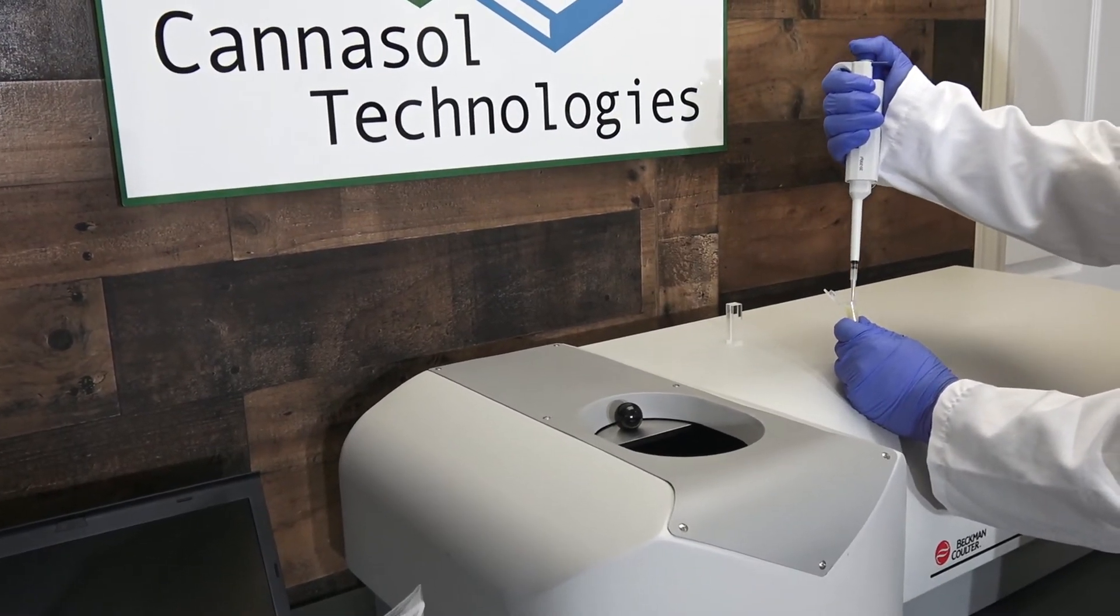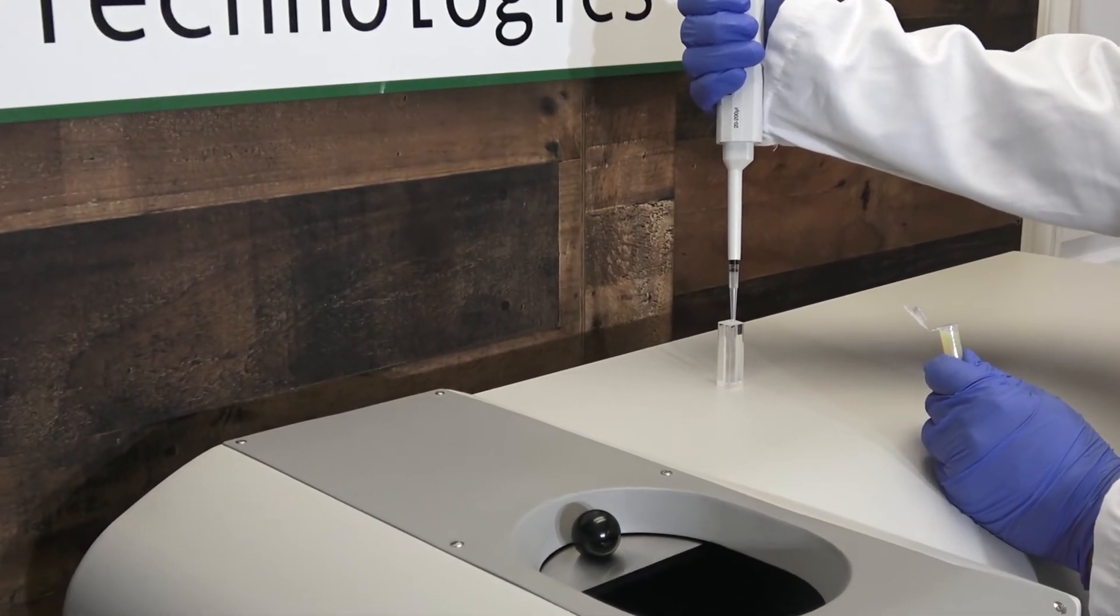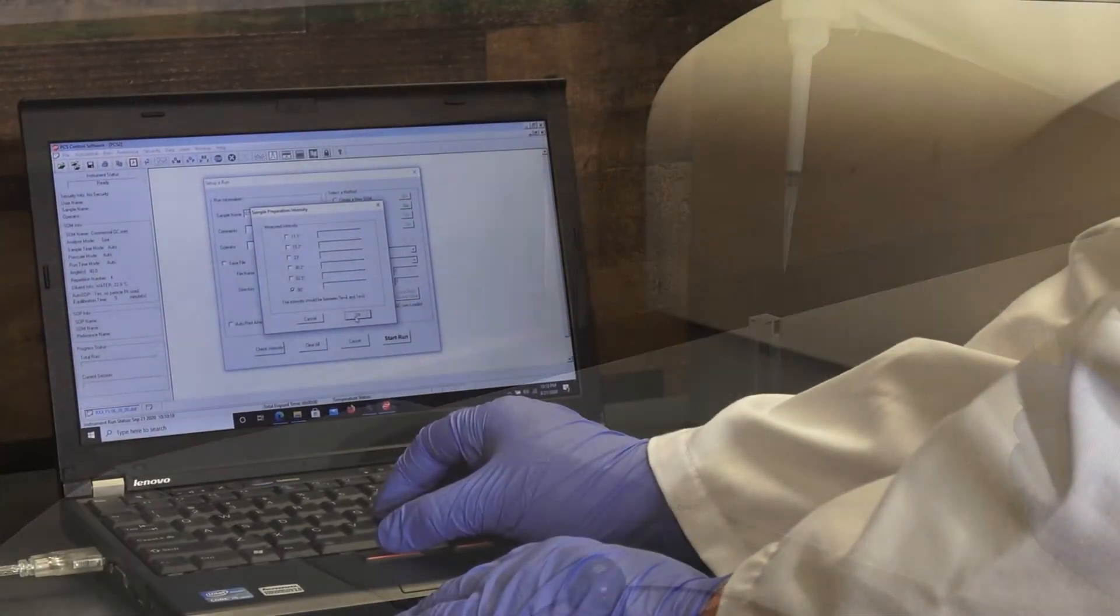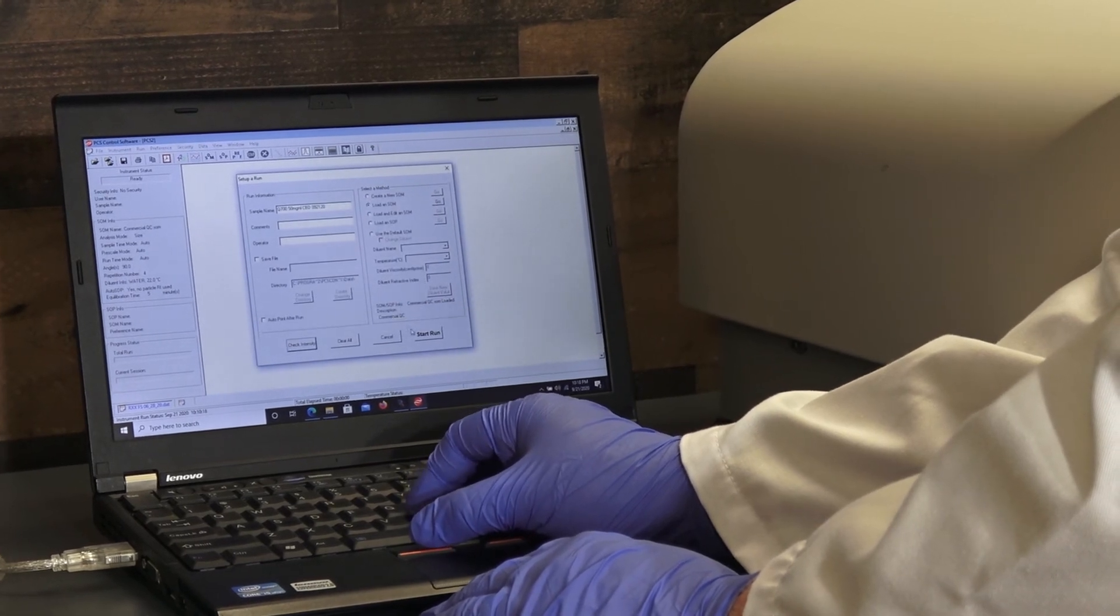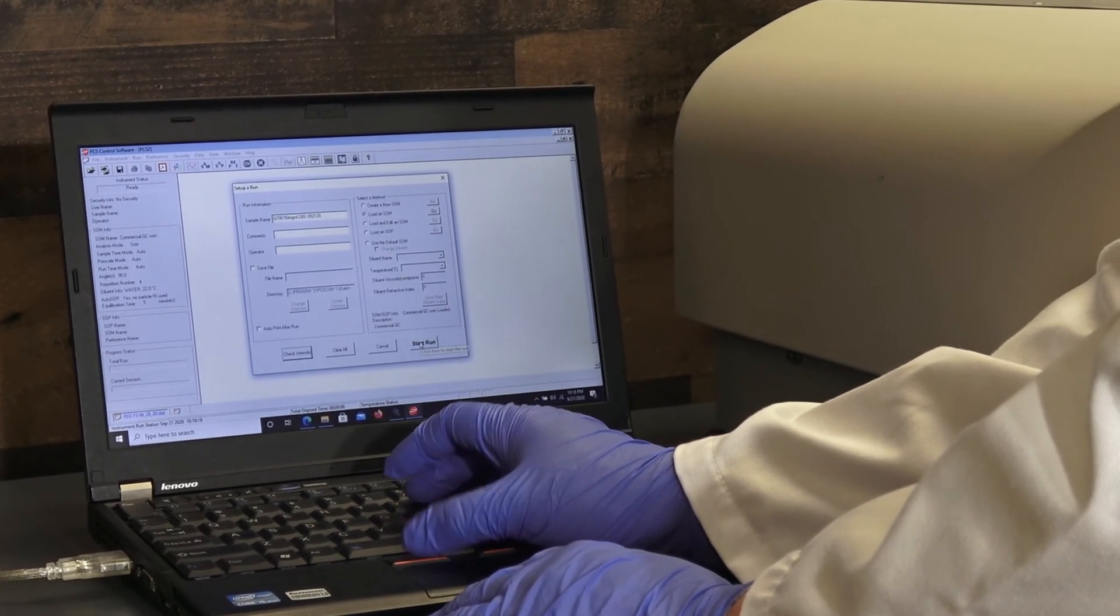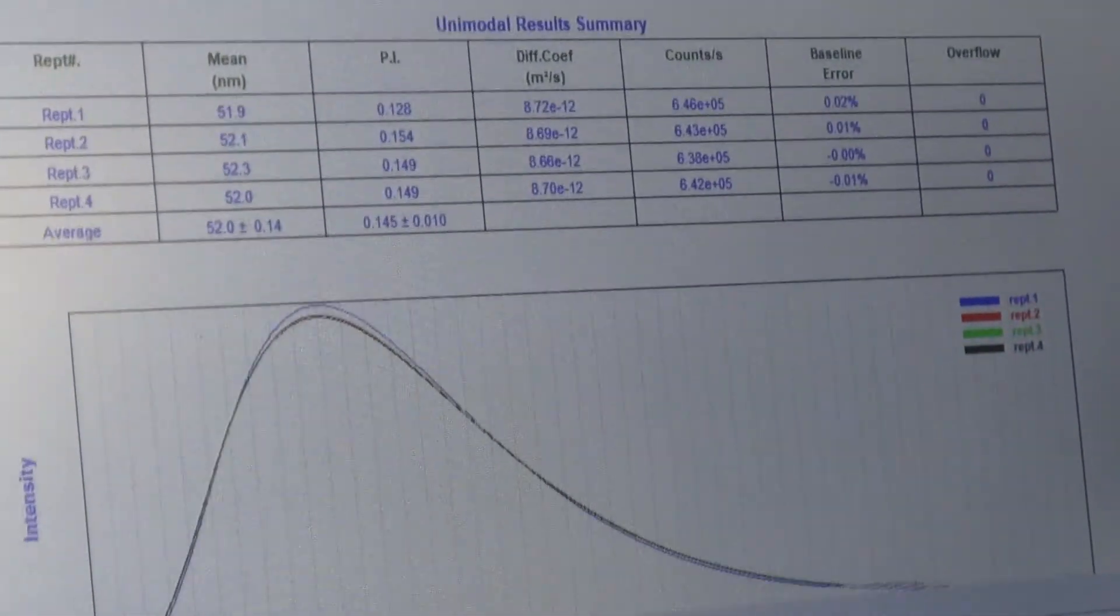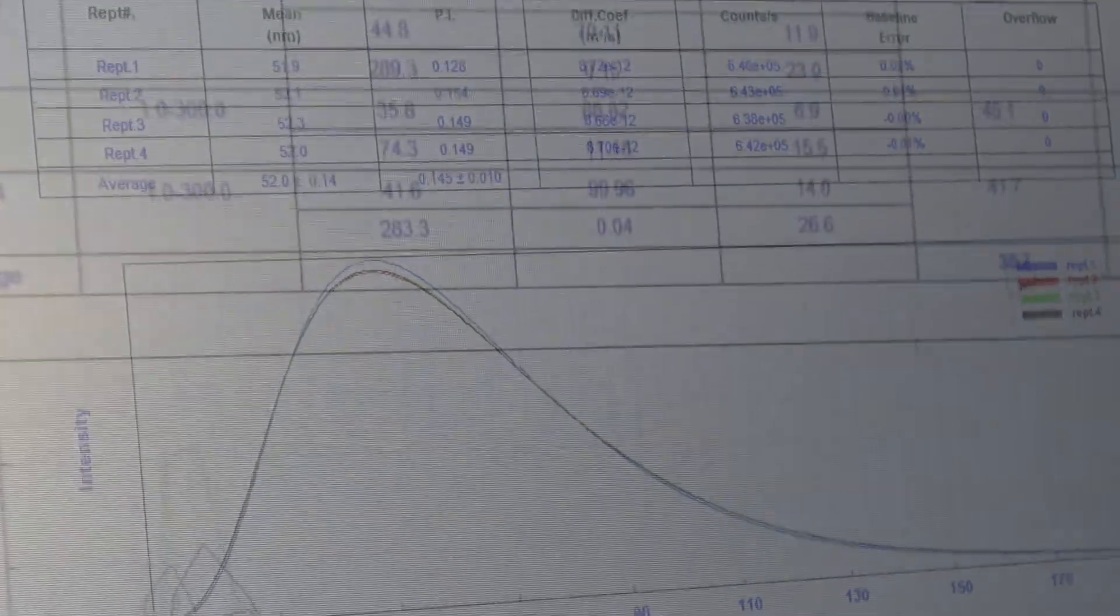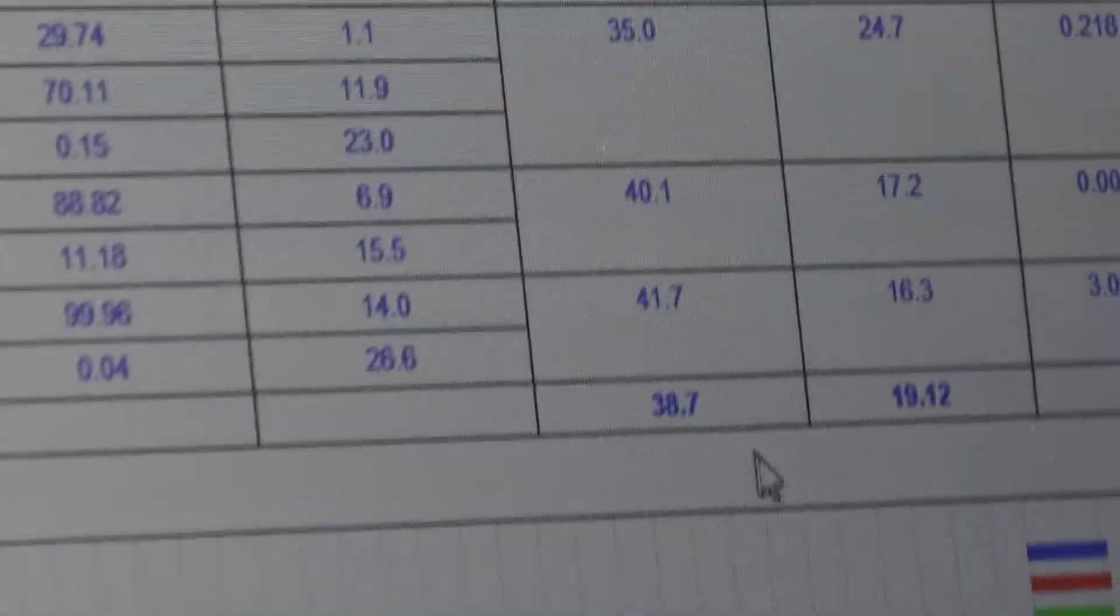If you have access to a dynamic light scattering device, you can use this to run a particle size analysis on the finished product. DLS makes use of laser scattering data to determine particle size distribution. You can see for this batch, we have an intensity-weighted size of 52 nanometers, and more importantly, a volume-weighted average size of 38.7 nanometers.